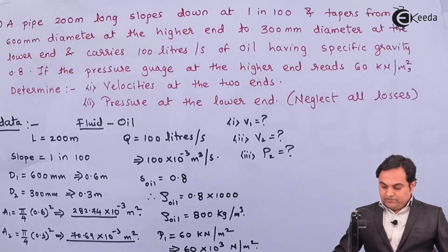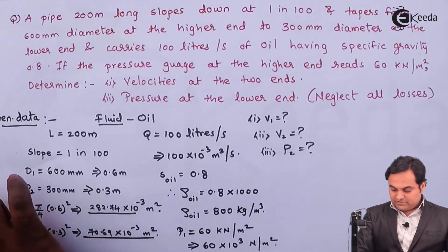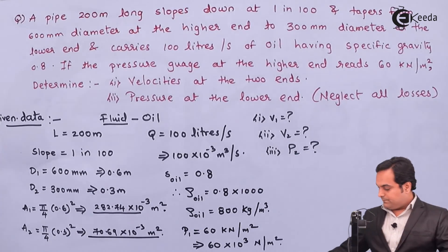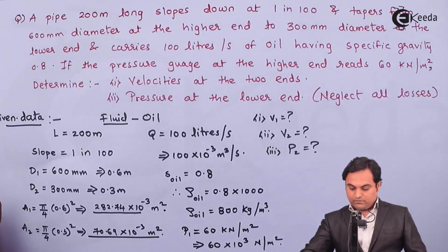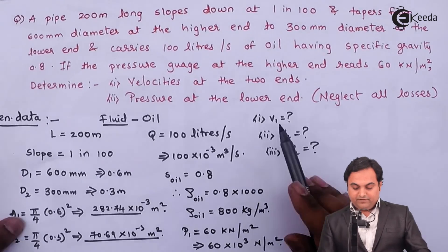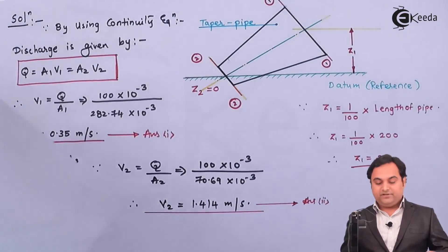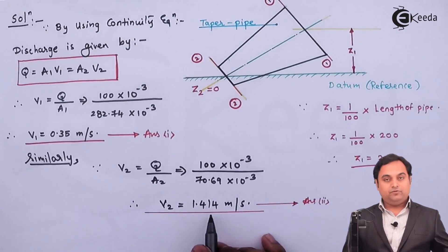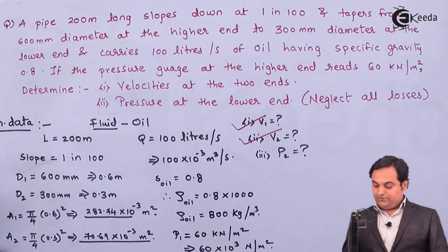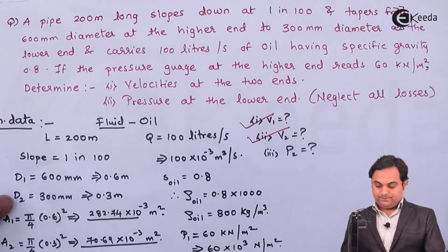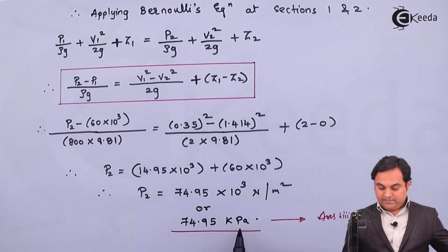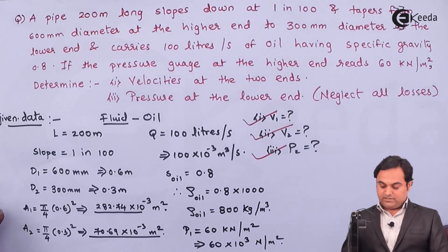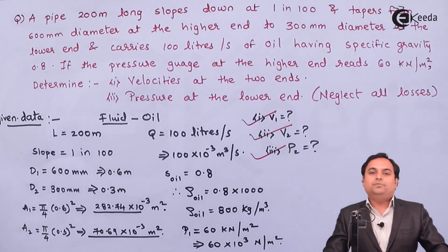To summarize the answers: velocity v1 = 0.35 m/s, velocity v2 = 1.414 m/s, and pressure at the lower end p2 = 74.95 kPa. All three unknowns have been solved and the problem is complete.